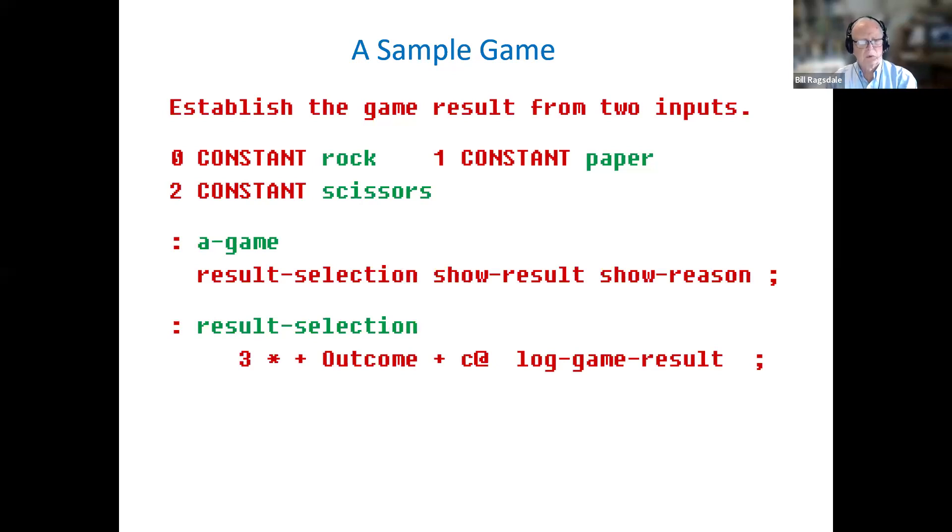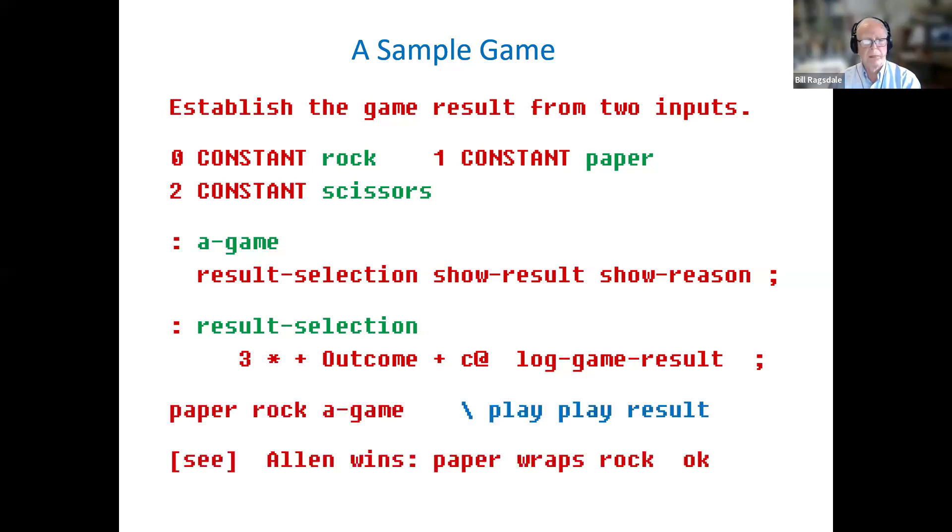The sequence for playing a game is quite straightforward. Under A game, we see that first a selection is made. We then show the result, and we show the reason for the result. And the result selection is the indexing into that array we just saw. So the result selection does the row column analysis, and either gives us the address for the entry. The bottom two lines show us a simple gameplay where paper will enter a stack value, rock will enter a stack value, a game plays. And then the result would be to say, in that particular case, Alan does the win of paper wrapping rock. We'll see this expanded in just a moment.